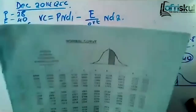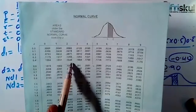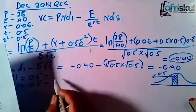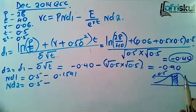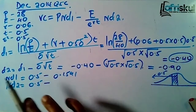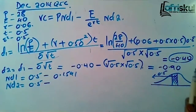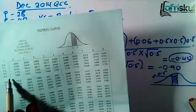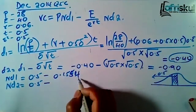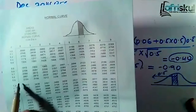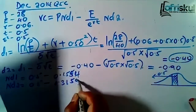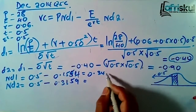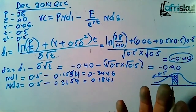From the normal table at 0.40, we get 0.1554. For d2 at 0.90, we get 0.3159. Since both values are negative, N(d1) equals 0.5 minus 0.1554, giving 0.3446, and N(d2) equals 0.5 minus 0.3159, giving 0.1841.